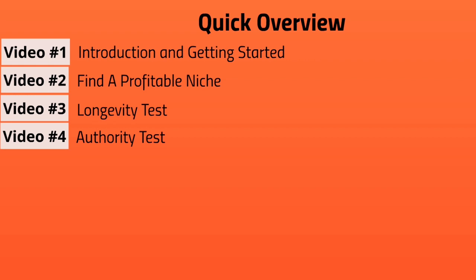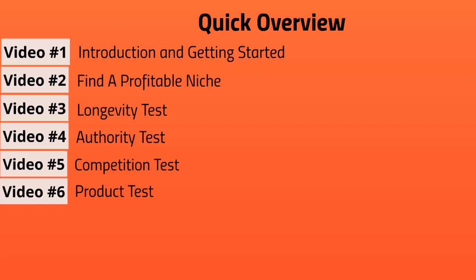Video five is the competition test to make sure you have enough competition. Video six is the product test to make sure everything will be profitable in the long run, because the worst case scenario is jumping into a niche with high demand that isn't profitable. Video seven is topic generation, and video eight is blog post creation.